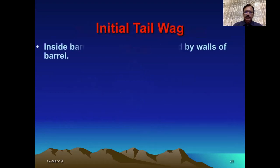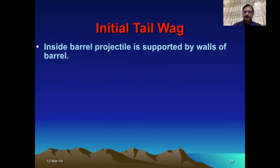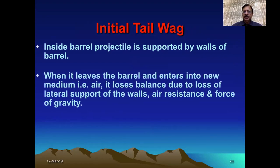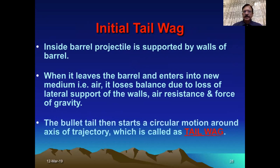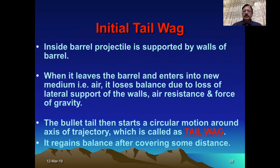Initial tail wag occurs when the bullet is within the chamber and traveling within the barrel, where it is supported by the walls of the barrel. When it leaves the barrel and enters another medium — air — due to loss of this lateral support, air resistance, and gravity, the bullet becomes unstable and wags. After traveling some distance it becomes steady, but initially it wags. That is the initial tail wag.